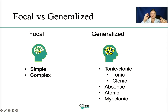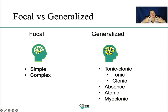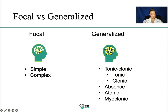We have subcategories of these. In the focal — meaning affecting only one part of the brain — we have something called simple or complex. And then for generalized seizures, we have something called a tonic-clonic, which could be subdivided into either just tonic or just clonic. Under generalized, someone may also have an absence seizure, an atonic seizure, or a myoclonic seizure.